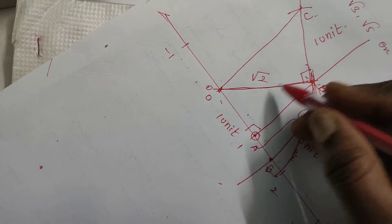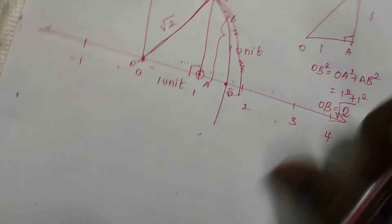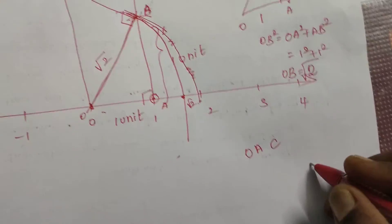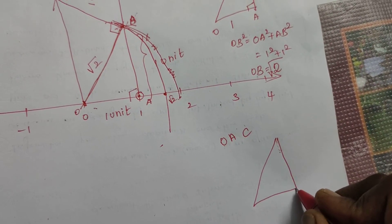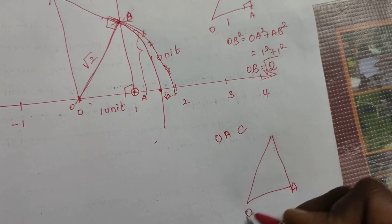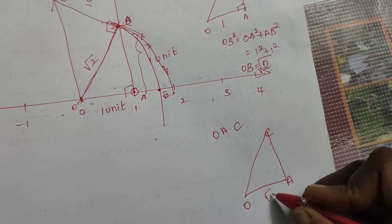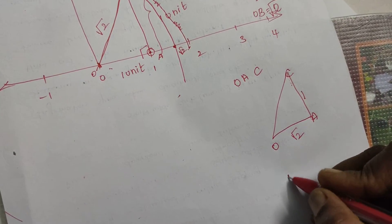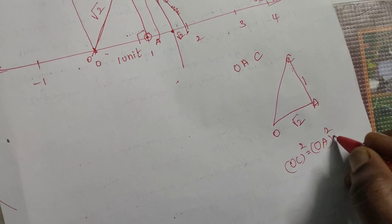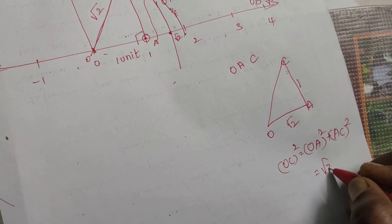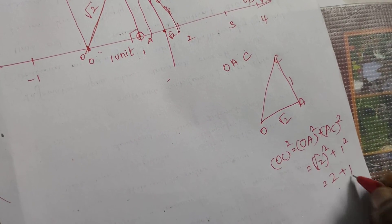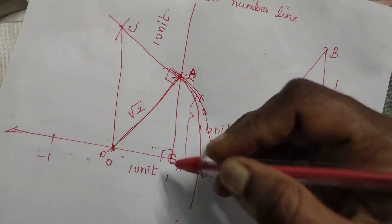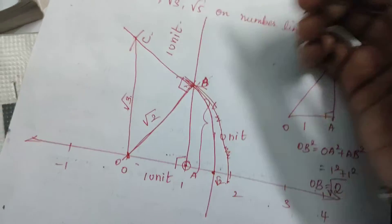Now, this is 1 unit and this is root 2 units. So consider triangle OAC. Where is the right angle? Right angle is at A. Here is O. Here is C. OA measurement is root 2 and here we have 1 unit. So what will be the measurement of OC? OC square will be equal to OA square plus AC square which is equal to root 2 square plus 1 square which is equal to 2 plus 1 equal to 3. So OC equal to root 3. So what is the measurement of OC? This measurement is root 3.